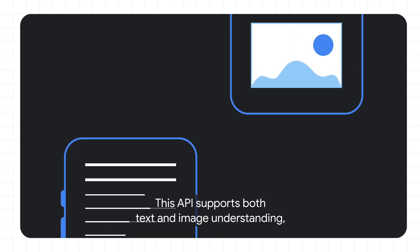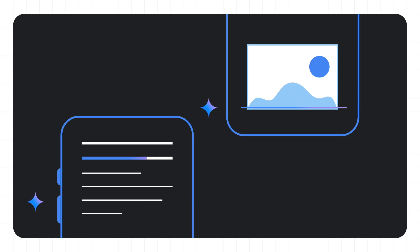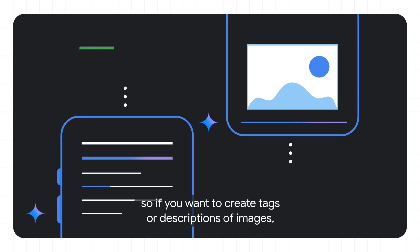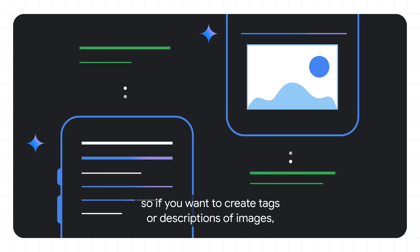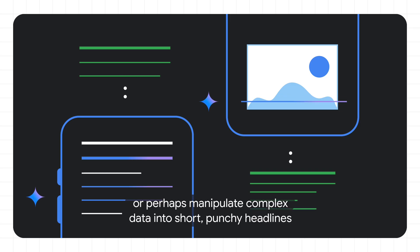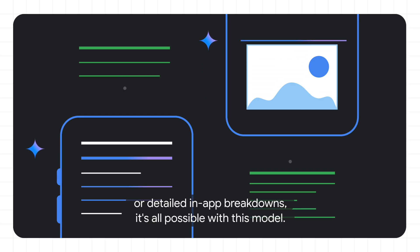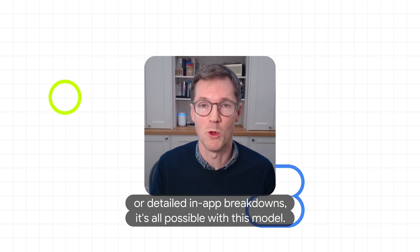This API supports both text and image understanding. So if you want to create tags or descriptions of images, or perhaps manipulate complex data into short, punchy headlines or detailed in-app breakdowns, it's all possible with this model.